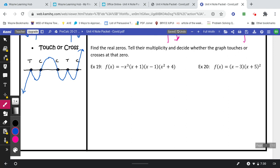So how can you tell whether they're supposed to cross or touch? Well it depends on the multiplicity. If the multiplicity is even it's going to touch. If the multiplicity is odd it's going to cross.